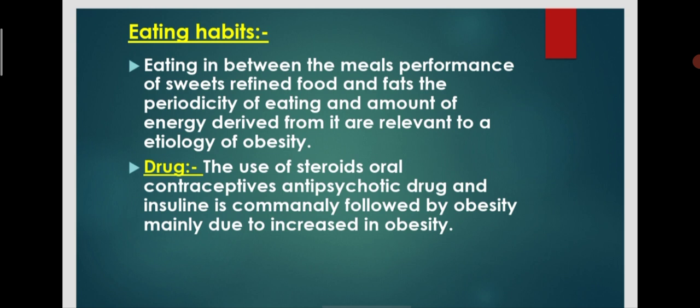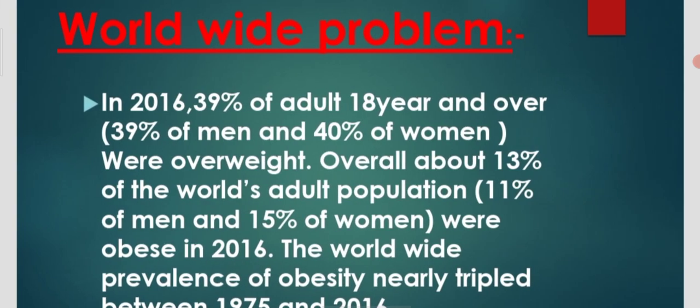The next is the worldwide problem. In 2016, 39% of adults aged 18 years and over — 39% of men and 40% of women — were overweight. Overall, about 13% of the adult population, comprising 11% of men and 15% of women, were obese in 2016. The worldwide prevalence of obesity nearly tripled between 1975 and 2016.